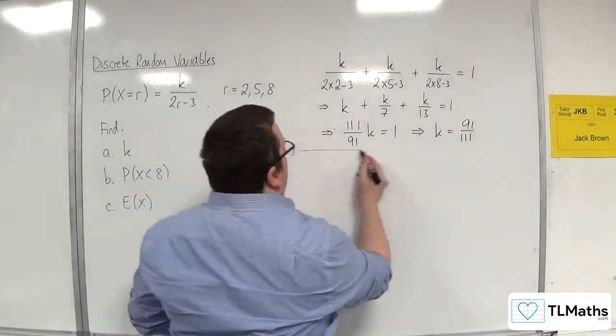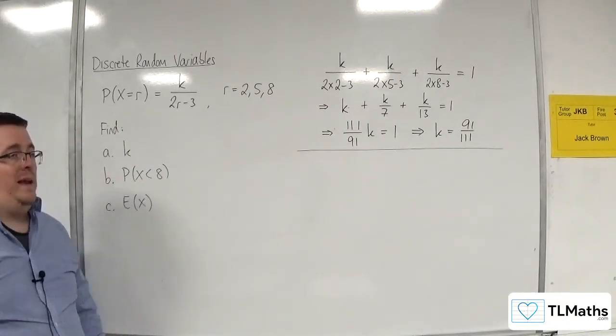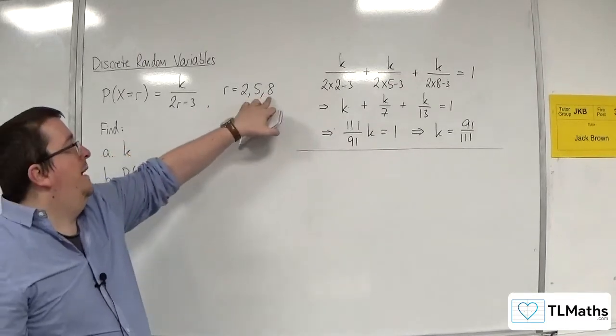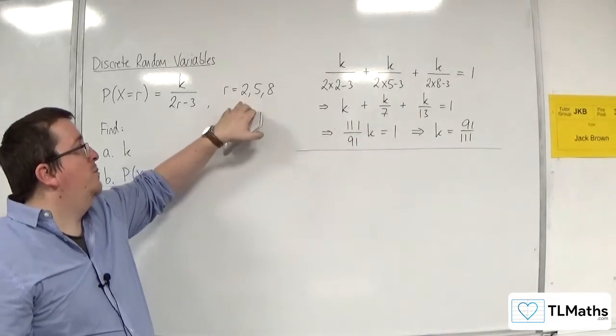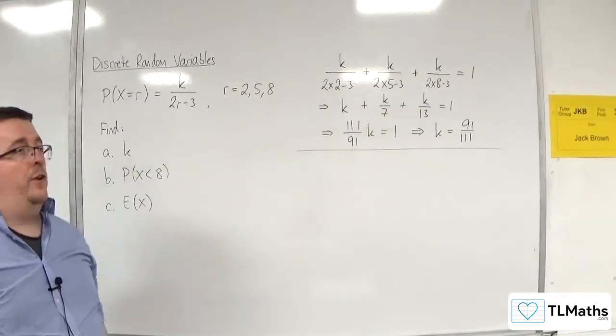OK, so that's our first result, that's a. Now for b, find the probability of x being less than 8. Well, x less than 8 means it's got to be either 2 or 5. So we could work out the probability of x being equal to 2 and the probability of x being equal to 5 and add those together.